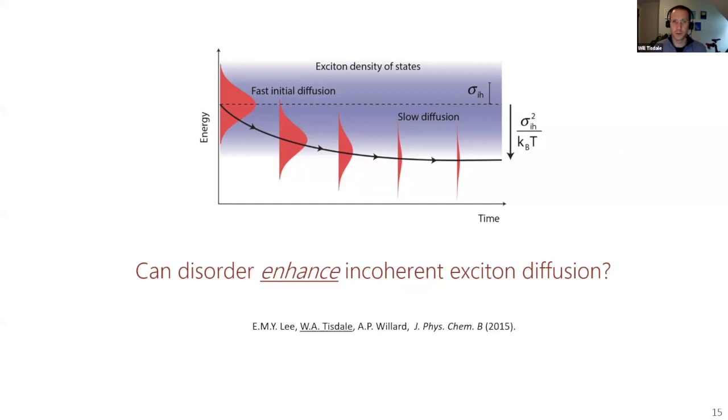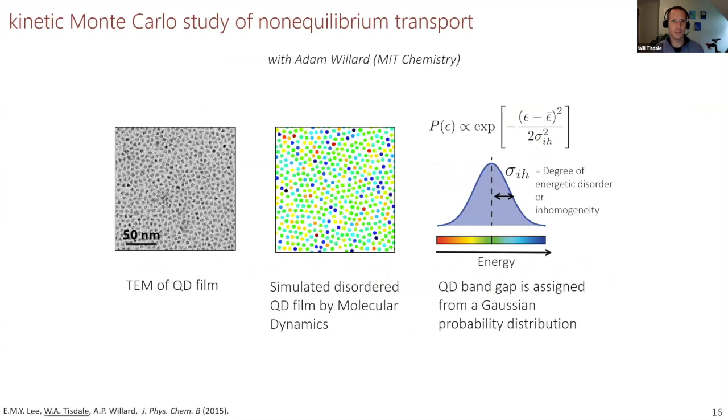But working with Adam Willard's group, Adam and Liza, our jointly advised student, developed some kinetic Monte Carlo models to investigate this behavior. We developed a KMC model that was benchmarked to our time-resolved spectroscopy data. We start with electron microscopy images. We use those to create spatial maps of quantum dots in the system. We assign each quantum dot an energy drawn from a Gaussian distribution, and that has a fixed energy in time. Then we excite quantum dots in this array with equal probability at any site in the film, and then watch them propagate in time using just incoherent Forster hopping dynamics.